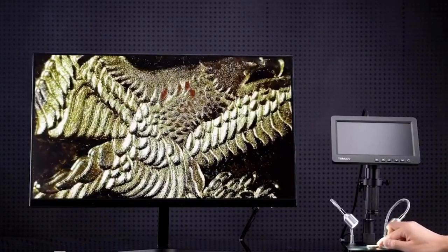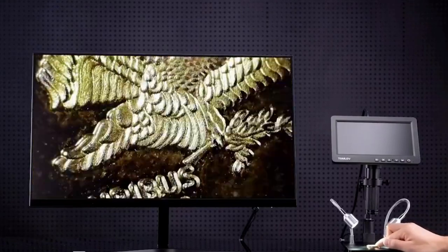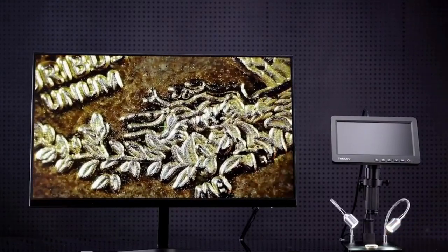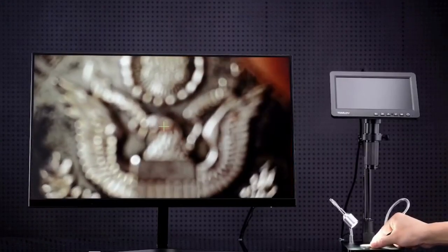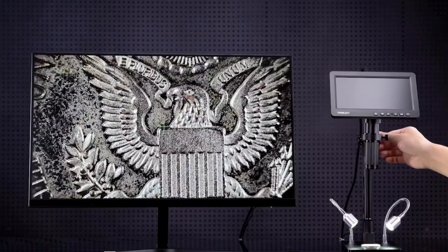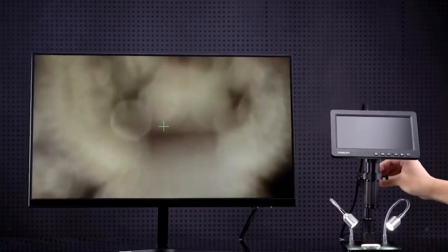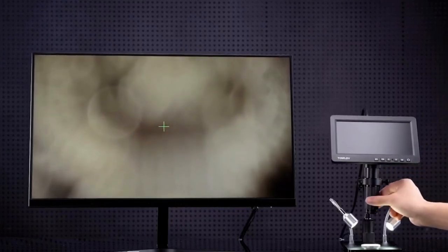The DM209 is designed to seamlessly integrate into your setup. You can connect it to an HDMI monitor for an awe-inspiring visual experience. Plus, it's compatible with trinocular microscopes, enhancing the quality of your observations. The inclusion of a 1-inch C-mount facilitates a comprehensive view, making collaboration and sharing easier than ever.